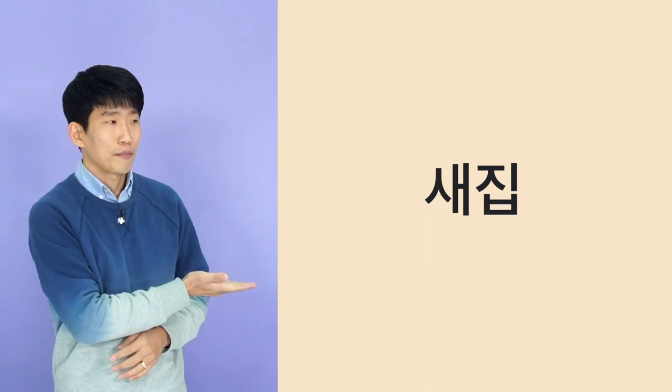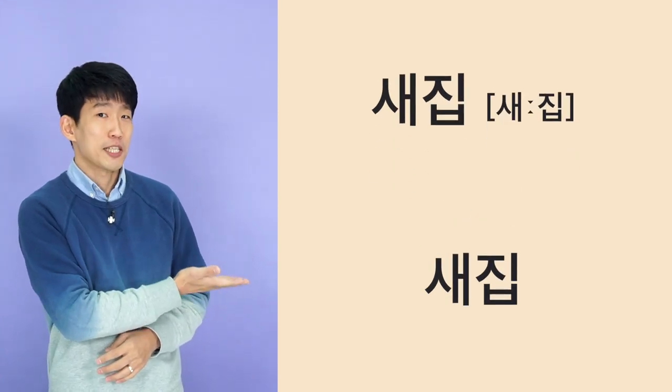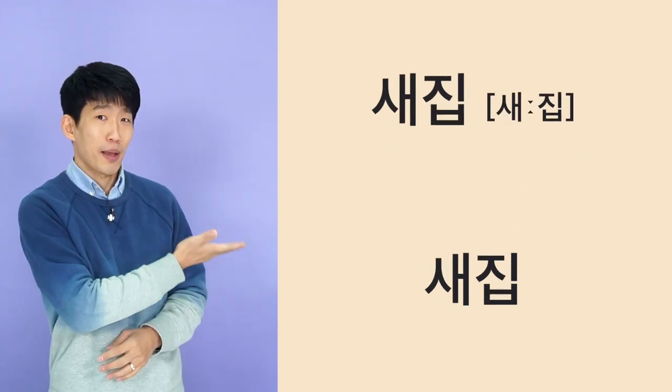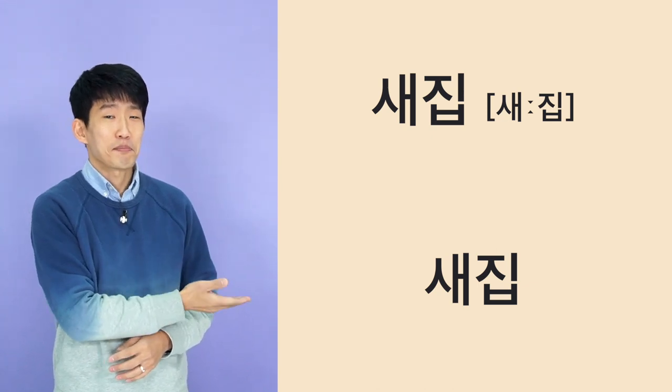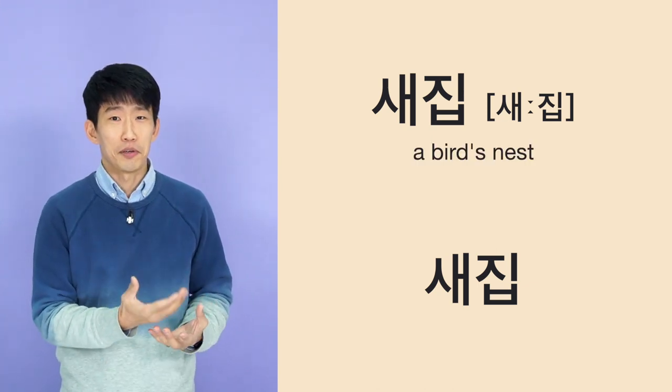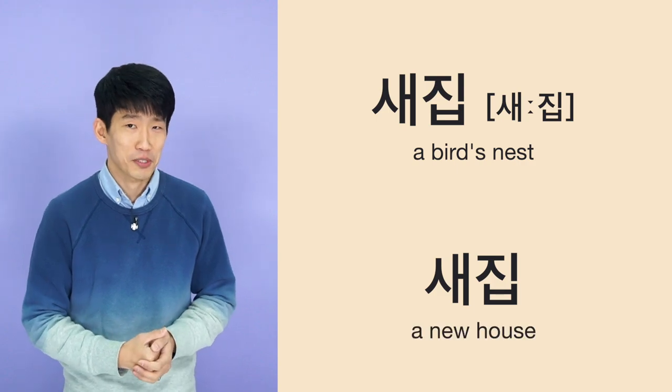Another example: you thought you knew a word really well, but then you realize you've been saying it wrong all along — saying 세 집 instead of 새 집. The spelling is exactly the same, but 새 집 means a bird's nest and 새 집 means a new house. As long as you continue learning, this kind of correction will happen naturally.